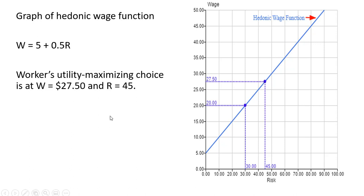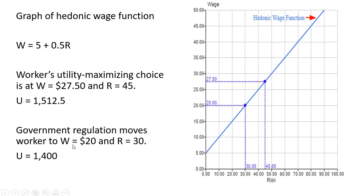If the worker is limited to a maximum risk level of 30 by a government regulation or mandate, I'd move the worker down here on the hedonic wage function. The government regulation moves the worker to a lower point on the hedonic wage function, and for this worker, that corresponds to a lower indifference curve, meaning lower utility.